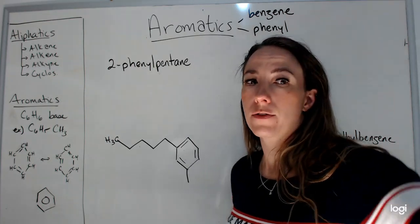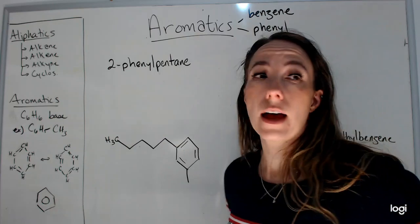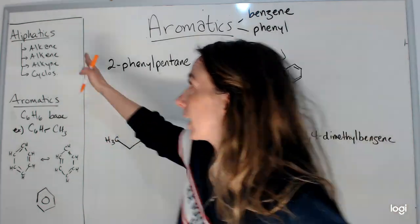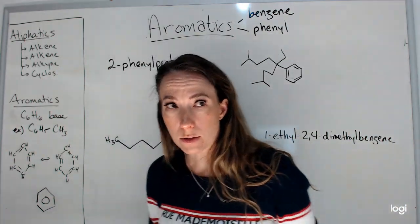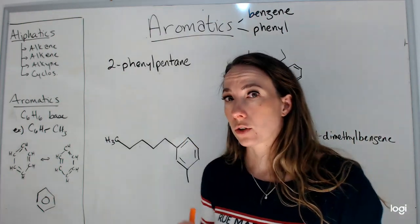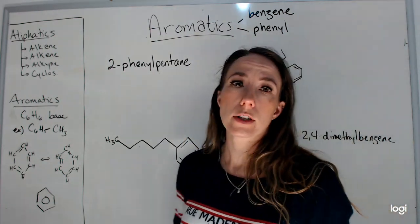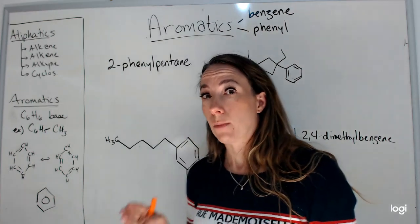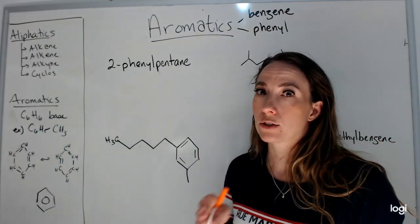Okay, we have just finished covering the aliphatics: alkanes, alkenes, alkynes, and cycloses. So aliphatics are either straight chain or circles. And then we're going to cover the aromatics, another group of hydrocarbons, hydrogen and carbons only.